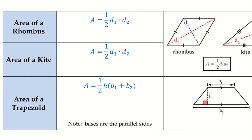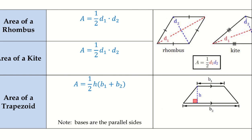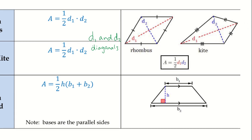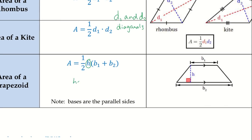Now let's move on to the area of a rhombus, kite, and trapezoid. For the rhombus and kite, the formula is one-half times d₁ times d₂, where d₁ and d₂ are the two diagonals. For the trapezoid, the formula is one-half times h times (b₁ + b₂), where h is the height and b₁ and b₂ are the two parallel bases, which are different lengths.